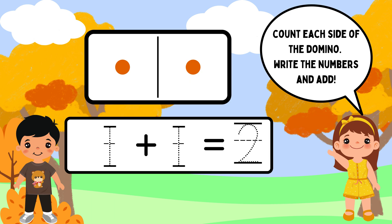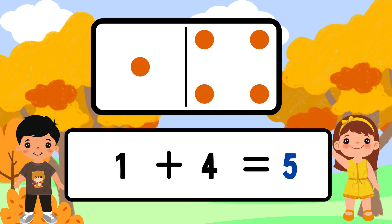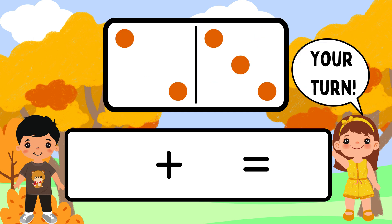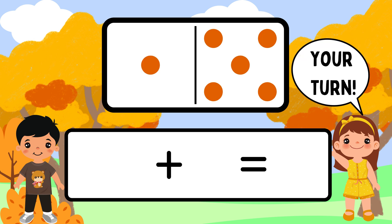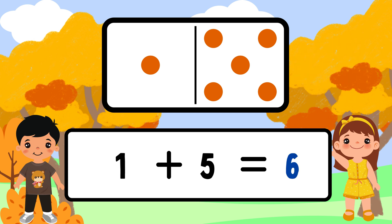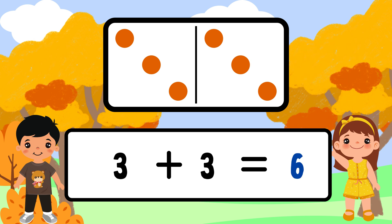Count each side of the domino and write the numbers and add. 1 plus 4 equal to 5. 2 plus 3 equal to 5. 1 plus 5 equal to 6. 3 plus 3 equal to 6.